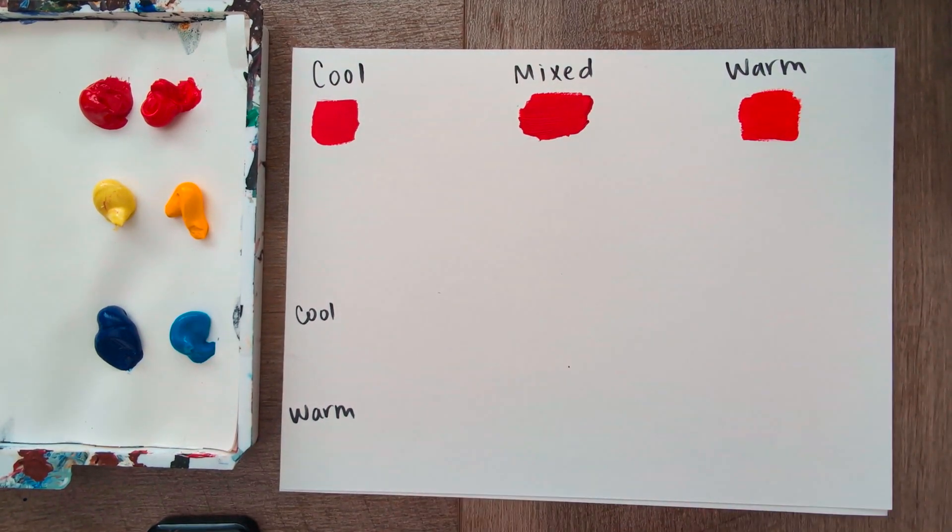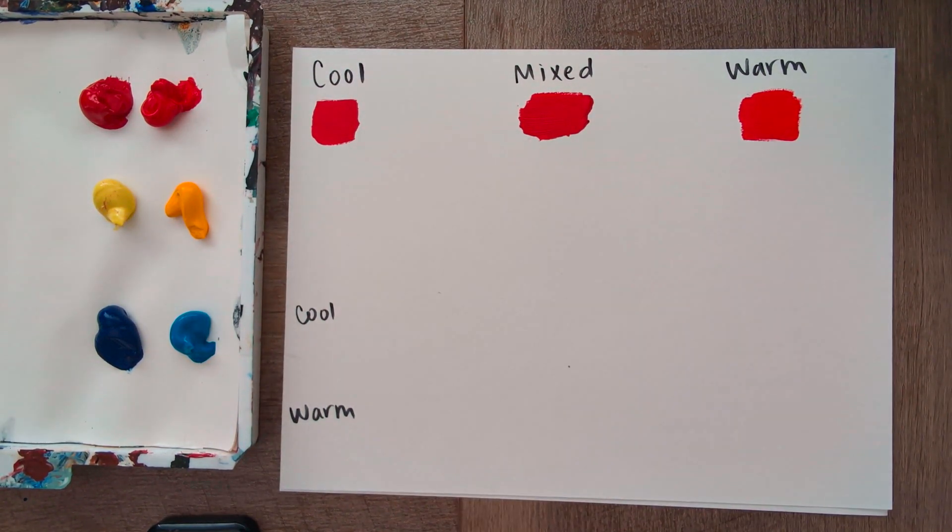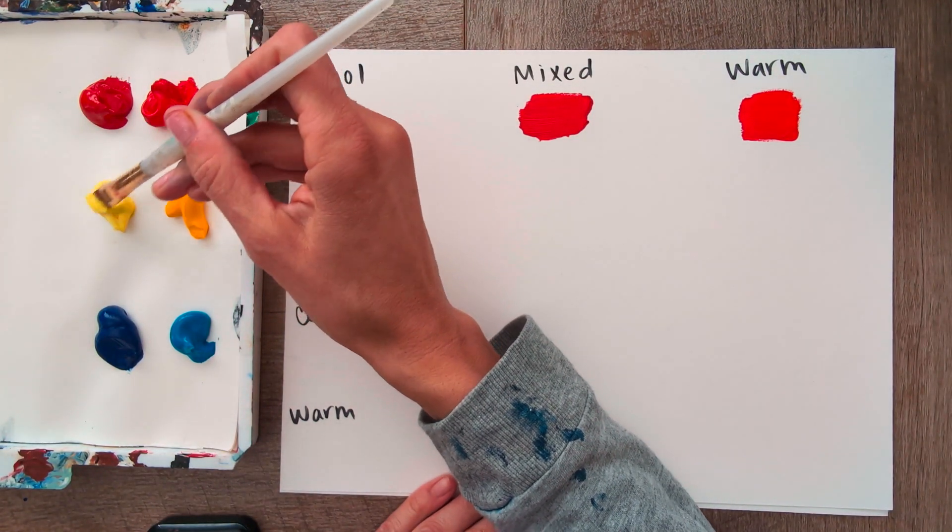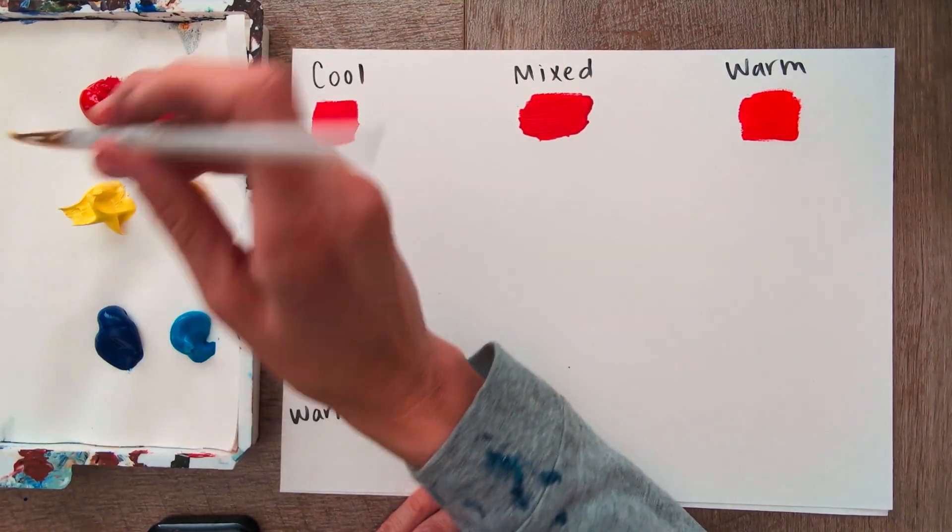Again, the red's not the best example. Cool, neutral, warm. Let's go ahead and do yellow. Yellow is going to be a lot more noticeable. So this is the cool yellow.